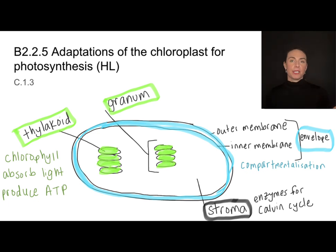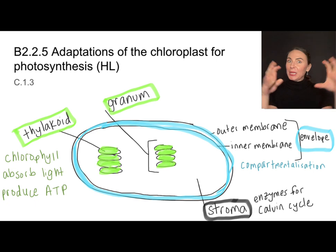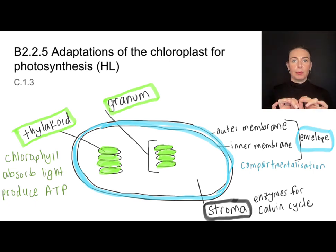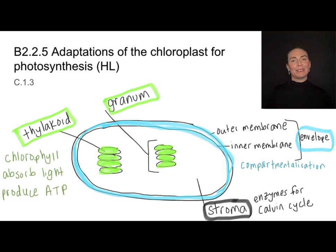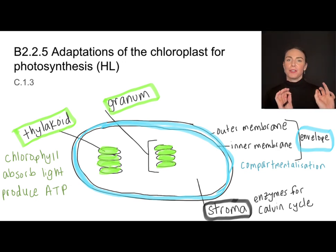Much like the matrix of the mitochondria, the stroma is going to be a great enclosed space inside the chloroplast to contain all of the enzymes necessary for the Calvin cycle. We need to focus on the form and the function — the structures — and how they help accomplish these jobs.